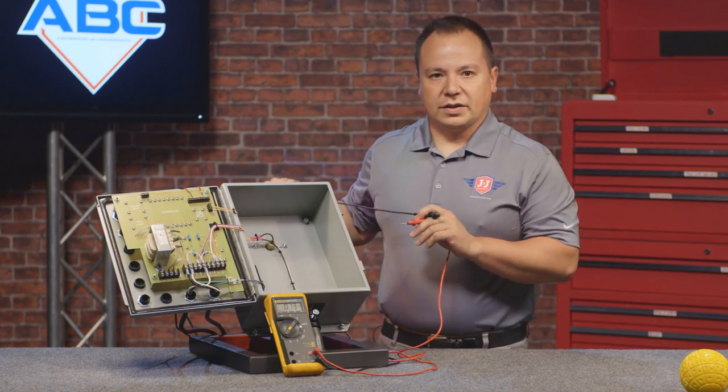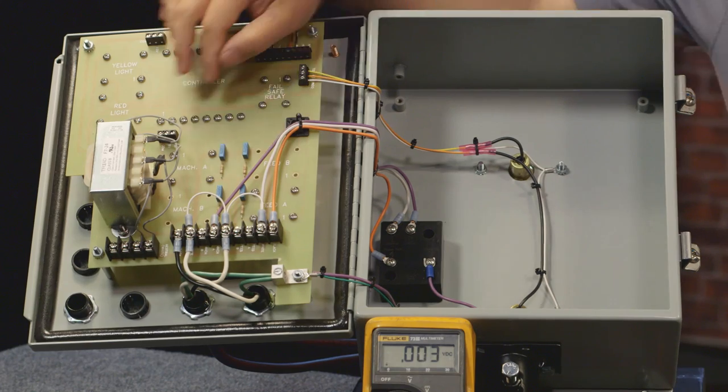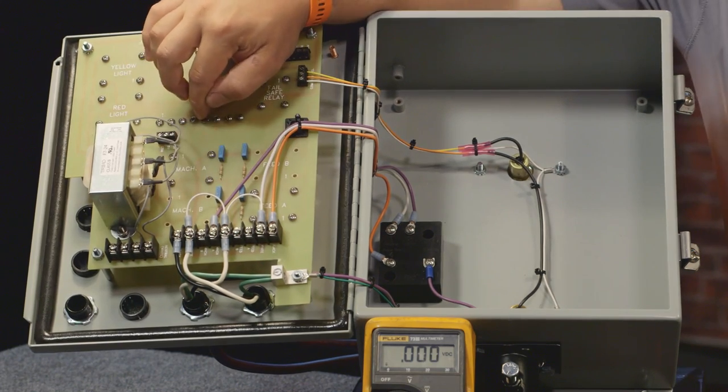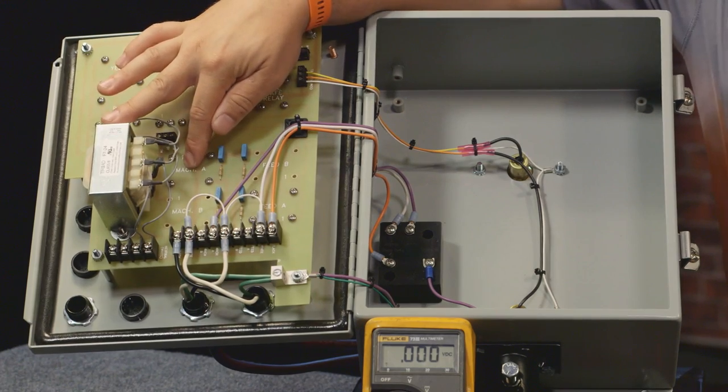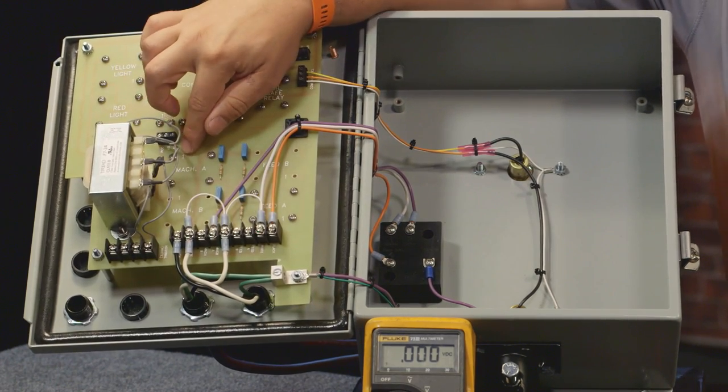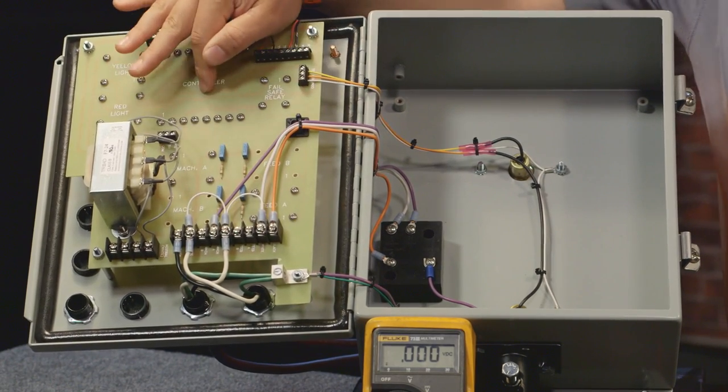If you're not getting voltage there, what could be happening is we have a loose screw somewhere on the board that's not supplying the voltage down to the relay, or we could have a bad trace somewhere, or the controller itself could be bad and not outputting the voltage to the relay.